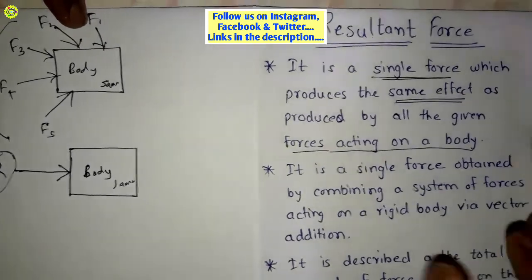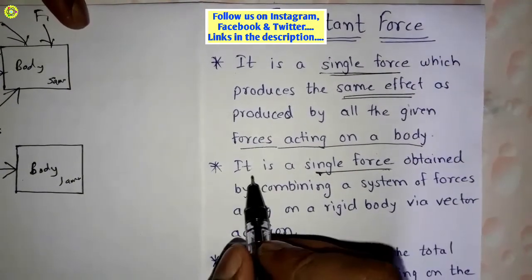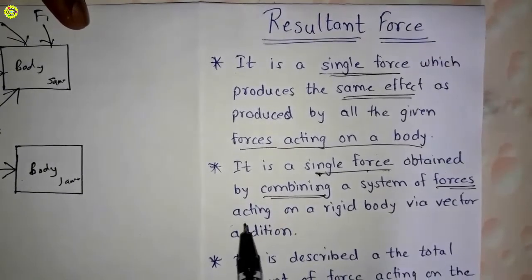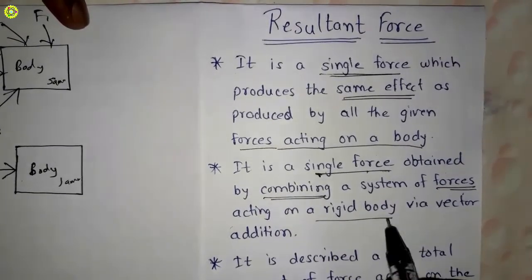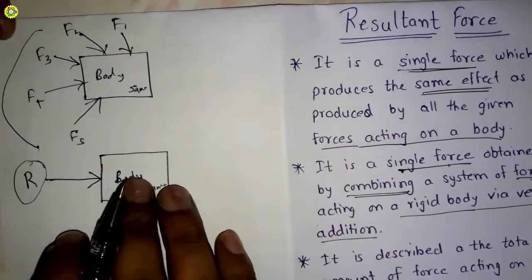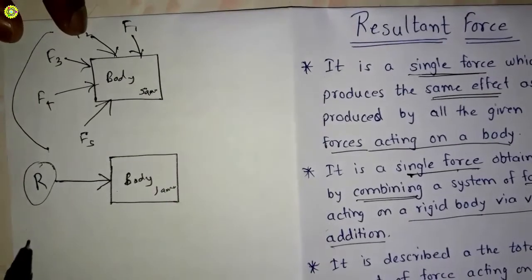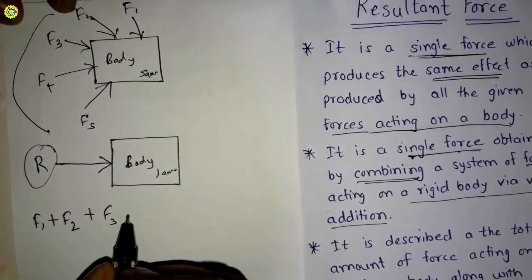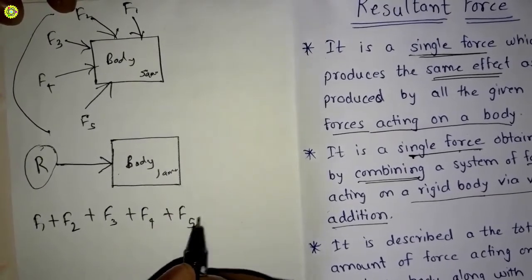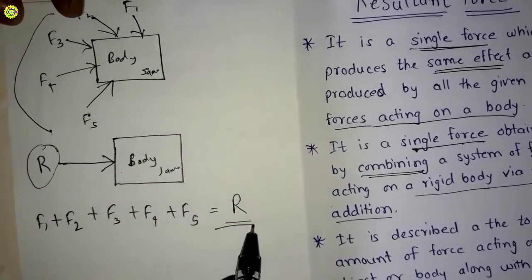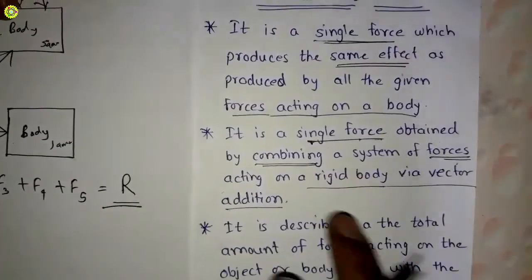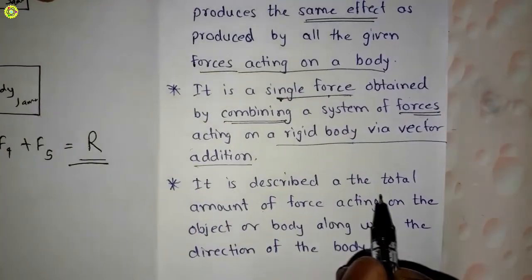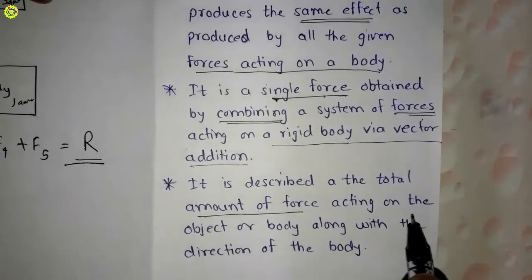Further, resultant force is a single force obtained by combining a system of forces acting on a rigid body via vector addition. So in this case, f1 + f2 + f3 + f4 + f5 equals R, that is the resultant force.